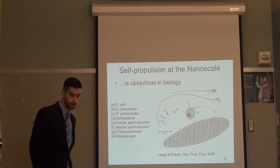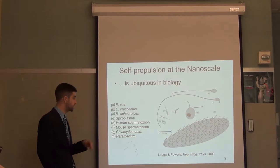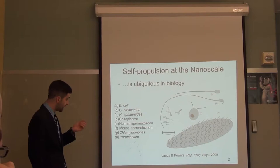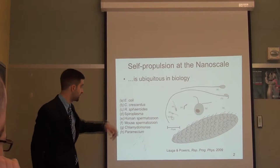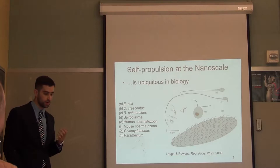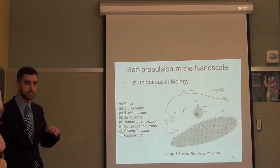A is E. coli, which is capable of sensing a gradient in nutrient concentration and then swimming towards regions of higher nutrient concentration. E is a human sperm cell, F is a mouse sperm cell, G is Chlamydomonas, which is an alga found in the ocean that does essentially the breaststroke with those two flagella. H is a paramecium, which is a small organism that swims to evade predators. Notice that all these swimmers are mechanical — they have some solid appendage that they wave or deform in order to swim.